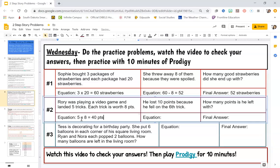Let's see what happened next. He lost 10 points because he fell on the sixth trick. So I had 40 points, I'm going to subtract or take away or lose 10 of those points. That's going to give me - oops, not adding, subtracting - 30. My final answer, how many points? 30 points with my label.